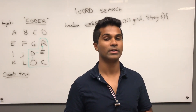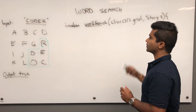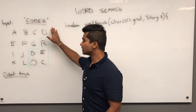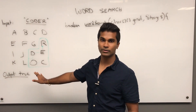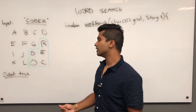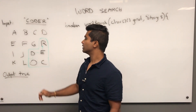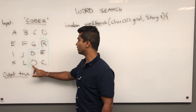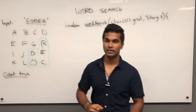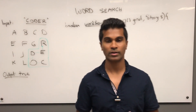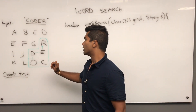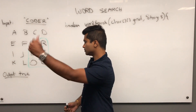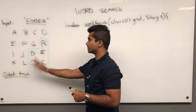What's up everyone, today we're going to be going over word search. The input is going to be a string and a grid of characters, and the output needs to be true if we can make this word using the letters in this grid. For example, we can find 'coder' — C-O-D-E-R. The conditions are that we can only go up, down, left, or right, and we can't reuse the same letter.